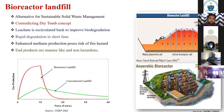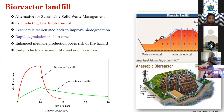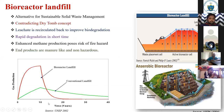In a bioreactor landfill system, the leachate produced from the landfill is recirculated back to the top of the landfill. This provides even moisture distribution in the waste, enhancing the biodegradation rate, achieving rapid degradation in a shorter period of time, with non-hazardous end products. Gas production in the bioreactor landfill takes much less time compared to conventional landfill.